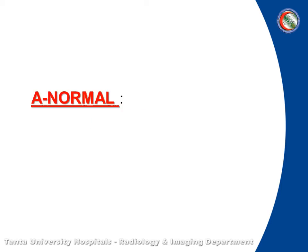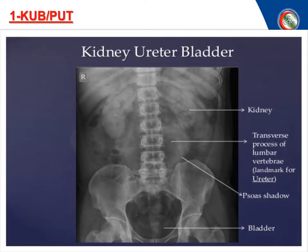First, let's start with normal findings. On KUB or plain X-ray, we depend on the kidney shadow — no abnormal shadow, no radio-opaque shadow, and no abnormal configurations.